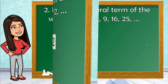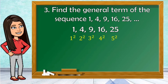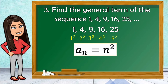Now let's proceed with example number 3: find the general term of the sequence 1, 4, 9, 16, 25. Analyze the pattern. The pattern here is getting the square of the counting numbers. So we have 1 squared, 2 squared, 3 squared, 4 squared, and 5 squared. So our general term is a sub n is equal to n squared. When we substitute 1, a sub 1 is equal to 1 squared, which is 1. A sub 2 is equal to 2 squared, which is 4, and so on.